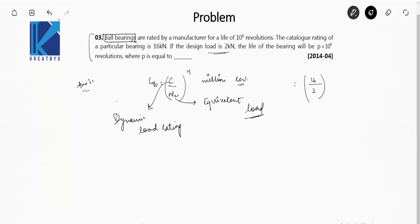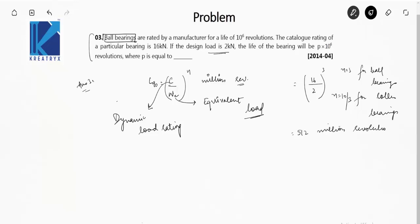N equals 3 for ball bearings, and N equals 10/3 for roller bearings. C is 16 kN, W_E is 2 kN, so (16/2)³ = 8³ = 512 million revolutions. Therefore P equals 512, meaning the life of the bearing is 512 million revolutions.